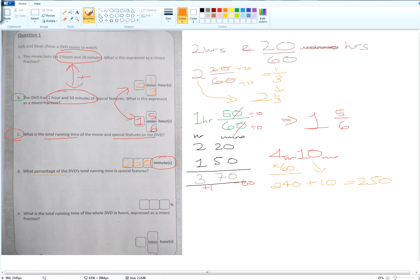Next, it goes, what percentage of the DVD's total running time is special features? Now, what do we know? We know that there's 250 minutes altogether. How many were special features? 1 hour and 50 minutes. If I want to change them to minutes, Alishpa, how do I change them to minutes? We do 60 add 50, which will give us 110 minutes. That's how many minutes are special features.